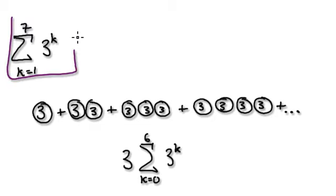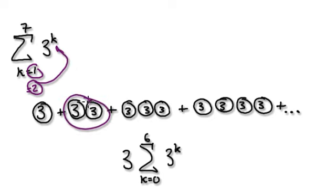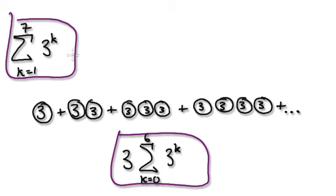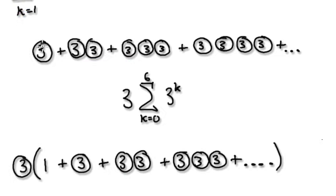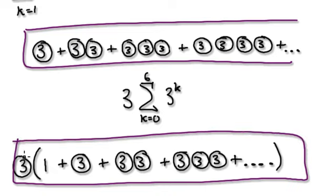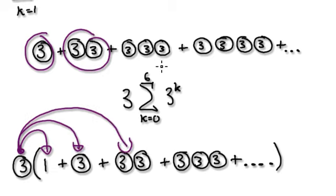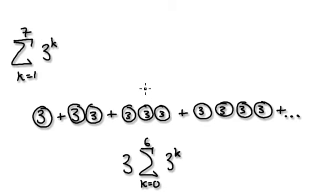Here is another way of writing it — same example as above. When k is 1, put it in and you get 3 to the power of 1 which is 3. Increase k and put 2 in, and you get the next term. You can rewrite this because you can actually factor out the 3 — this times this gives this, this times this gives this, and so on — so you can factorize out the 3.